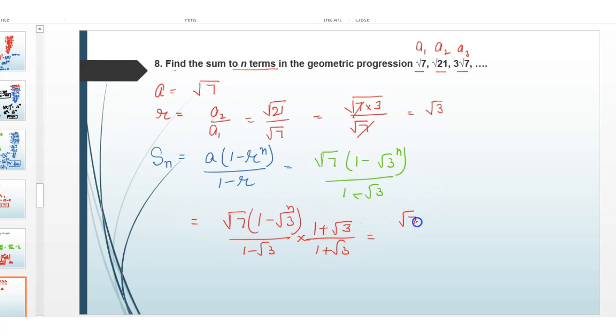So this becomes root 7 into 1 minus root 3 raised to power n into 1 plus root 3 divided by 1 minus root 3 square which is 3, so this equals minus 2. Here we have applied the formula a minus b into a plus b equals a square minus b square.